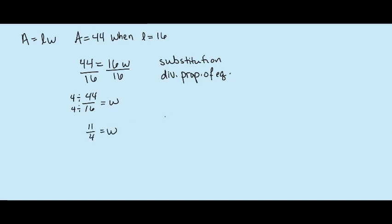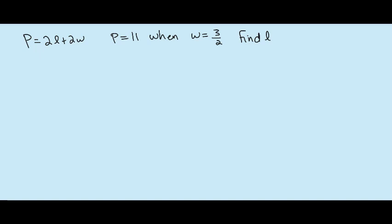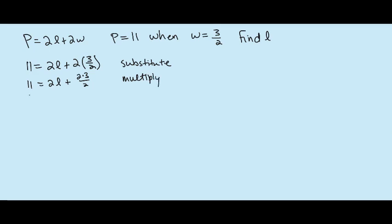That gives me 11 over 4 equals W. Now the perimeter formula for a rectangle is 2L plus 2W — 2 times the length plus 2 times the width. It tells us the perimeter is 11 when the width is 3 halves, and asks us to find L. We substitute: 11 equals 2L plus 2 times 3 halves. Then I multiply that fraction: 2 times 3 over 2.